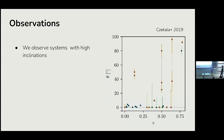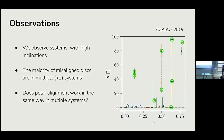Looking at observations, we expect to see a correlation between the inclination of the circumbinary disk and the stars as a function of eccentricity. We do see it: for higher eccentricity there are highly inclined disks. Studying these systems in detail and asking how many are inside multiple systems — systems with more than two stars — we found that basically the majority of misaligned disks are in systems with more than two stars, shown as green circles. So we ask whether polar alignment works in the same way in systems with more than two stars.